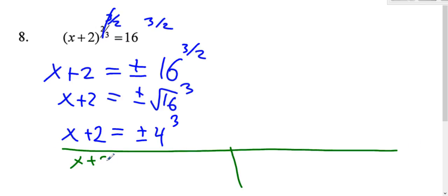So that's x plus 2 equals positive 4 to the 3rd. 4 times 4 times 4 is positive 64. Or negative 4 times negative 4 times negative 4 is negative 64.